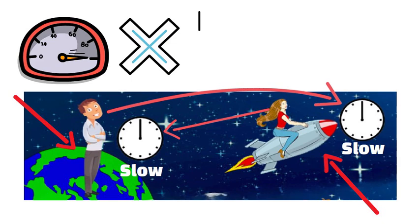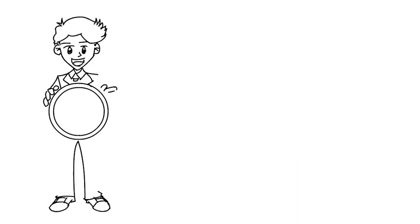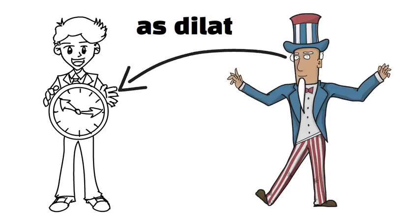This isn't a trick of measurement. It reflects real differences in elapsed time. Your own clock still ticks normally to you, but someone else moving at a very different velocity will measure your time as dilated.